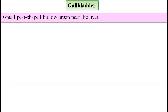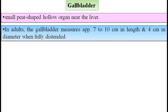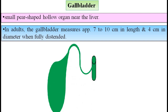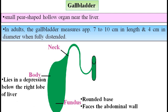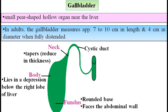Gallbladder is a small pear-shaped hollow organ near the liver. In adults, it measures approximately 7 to 10 cm in length and 4 cm in diameter when fully distended. The gallbladder has three parts: fundus, body, and neck. The fundus is the rounded base that faces the abdominal wall. The body lies in a depression below the right lobe of the liver. The neck is the tapering end of the gallbladder, and it leads to the cystic duct.